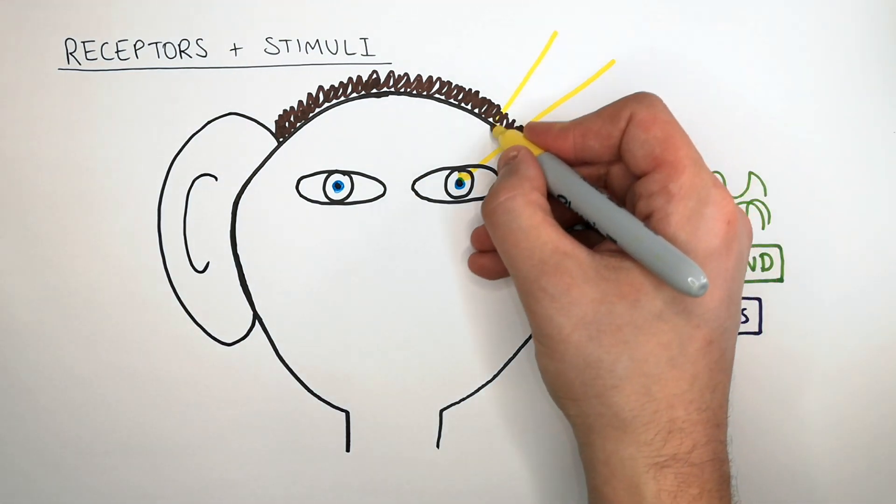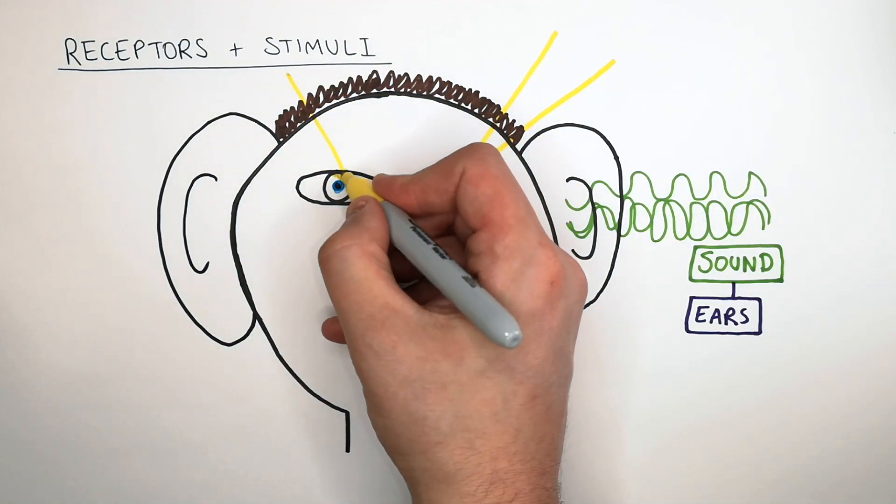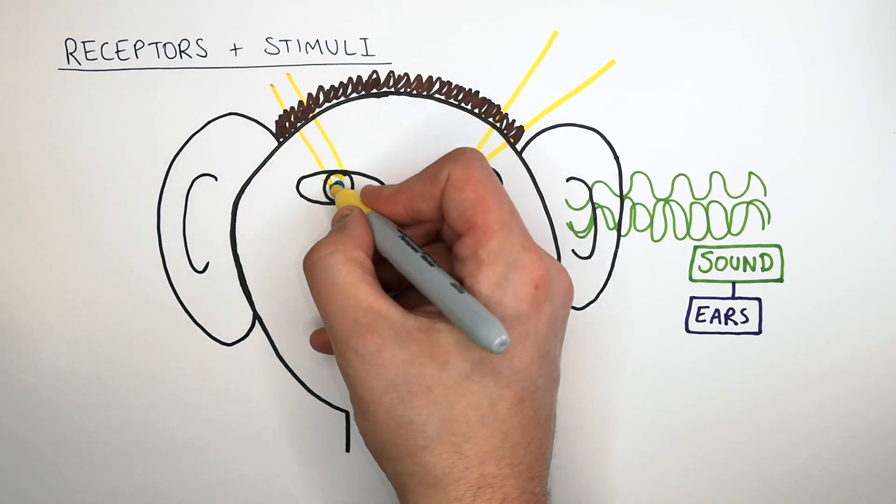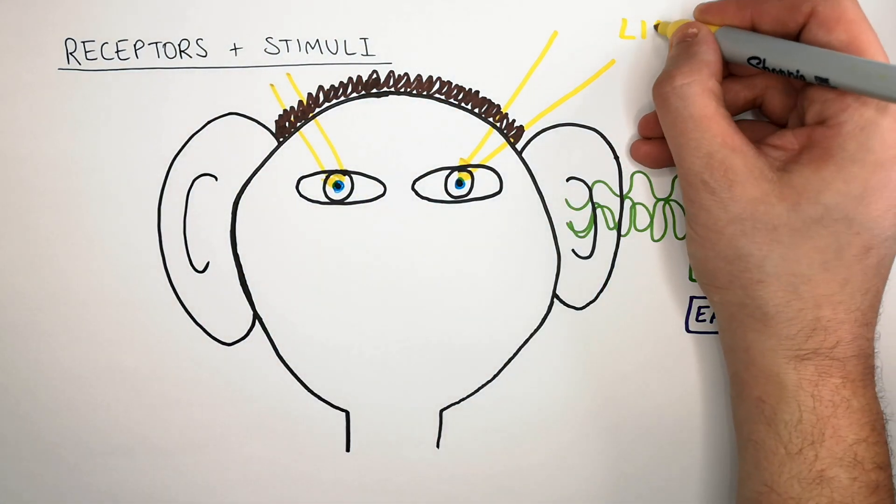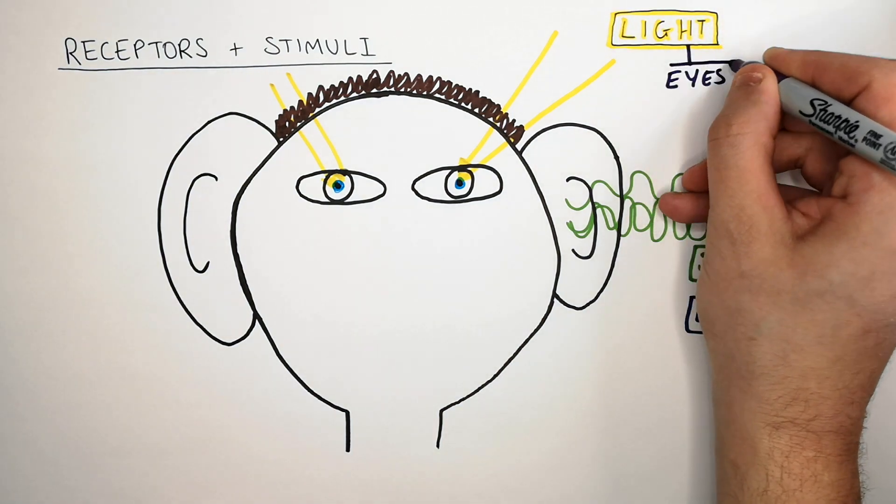In a pitch black room, if there is no light and something is thrown at you, you will not be able to see it because it is light that your eyes detect. The stimulus is the light and the receptors are the eyes.